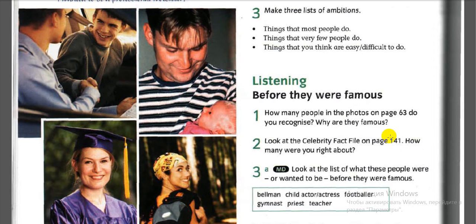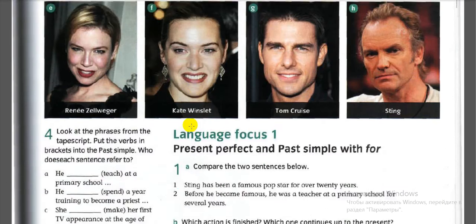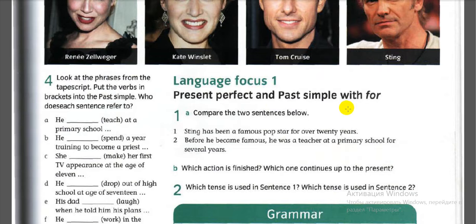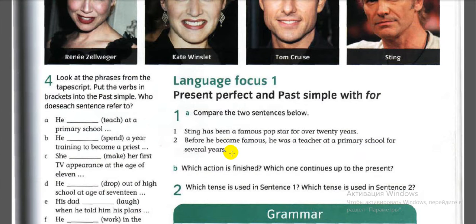Next: language focus one — present perfect and past simple. Compare the two sentences below. Pause and read them. Now let's read together: 'Sting has been a famous pop star for over 20 years.' Next sentence: 'Before he became famous, he was a teacher at a primary school for several years.'